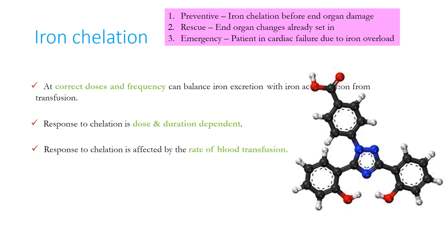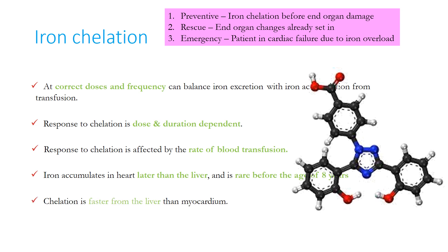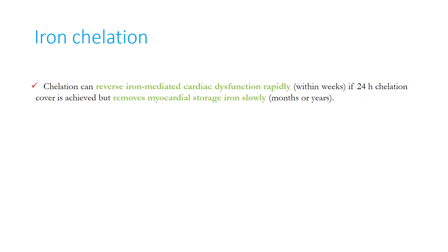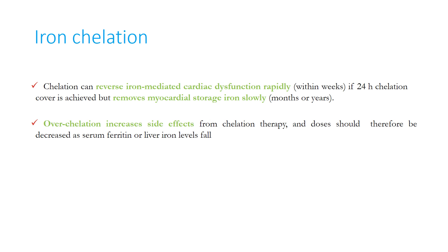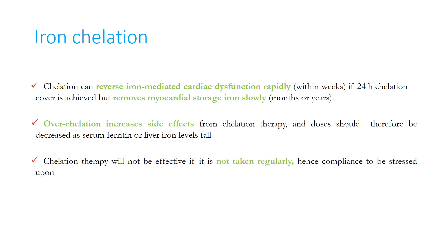Iron accumulates in the heart later than the liver and is rare before the age of 8 years, so cardiac toxicity is not typically seen in young children. Chelation is faster from the liver than from the myocardium. Chelation can rapidly reverse iron-mediated cardiac dysfunction, but myocardial storage of iron is removed slowly. Over-chelation increases side effects, so doses should be decreased as serum ferritin or liver iron levels fall. Chelation therapy will not be effective if not taken regularly, since it binds to labile iron — compliance must be stressed.